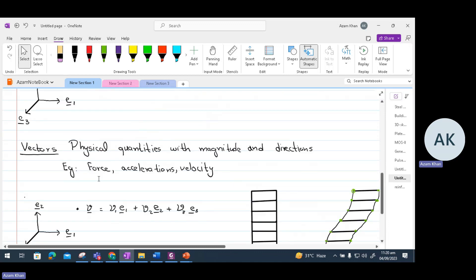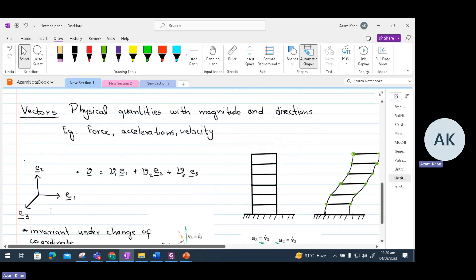Now let's discuss vectors. Vectors are physical quantities with magnitude and directions. The example of vectors is force, accelerations, velocities, etc. Within a Cartesian coordinate system, a vector can be decomposed into three components. As shown, we have got component V1, which is in the direction E1, another one V2 in the direction E2, and the third one V3 in the direction E3.